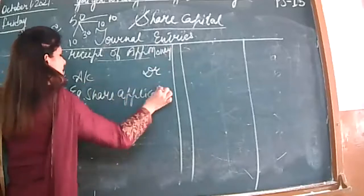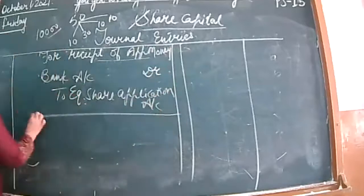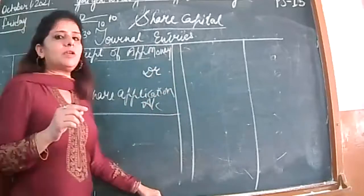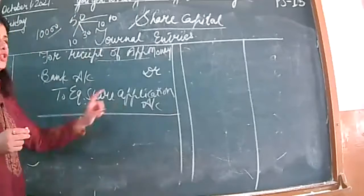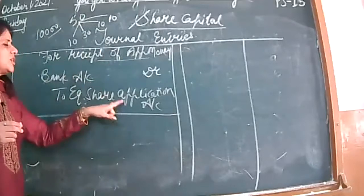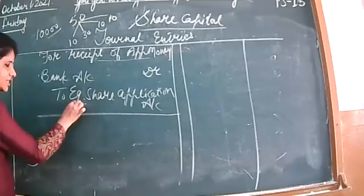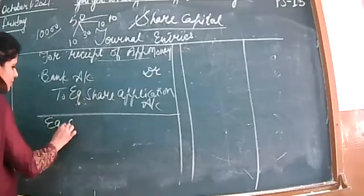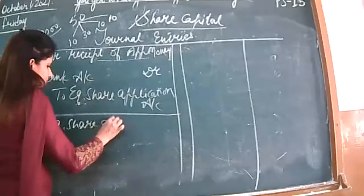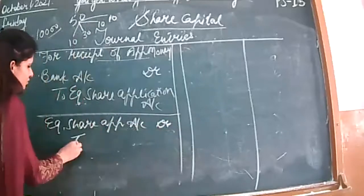The entry goes to share capital. The next entry: you should debit it. This will be a debit to equity share application account, transferred to equity share capital.